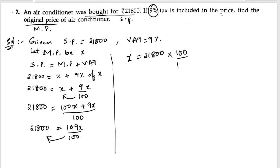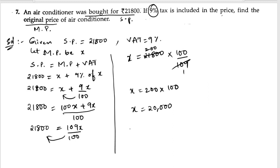Now let us send this to the other side. We will get x is equals to twenty-one thousand eight hundred into hundred by one hundred and nine. Cancelling: two thousand one hundred and eighty divided by one hundred and nine equals twenty, so x is equals to two hundred into hundred, which is twenty thousand. Therefore the marked price is rupees twenty thousand.